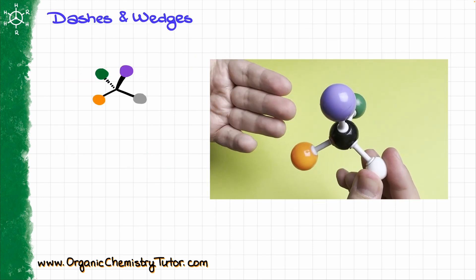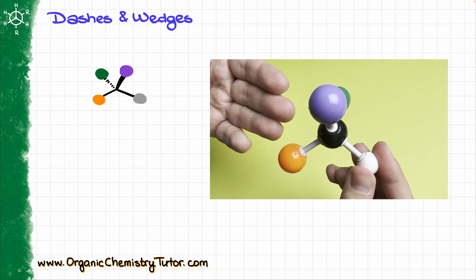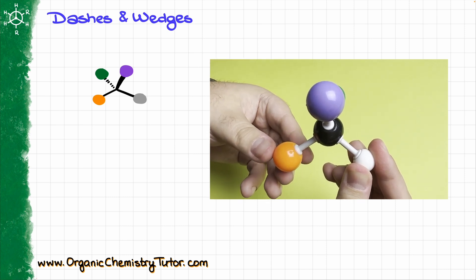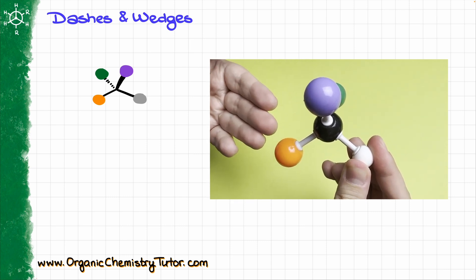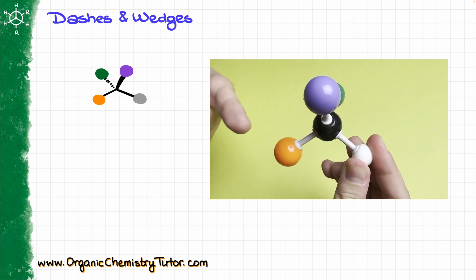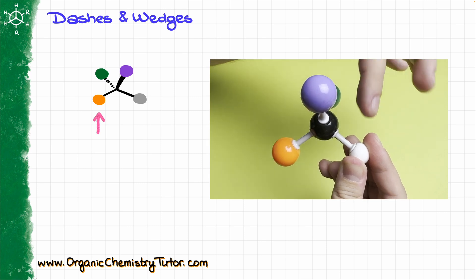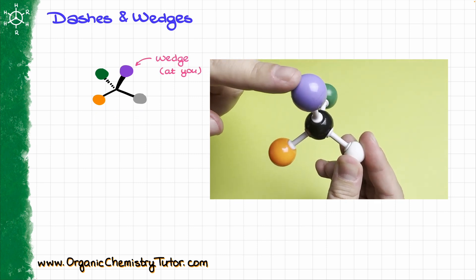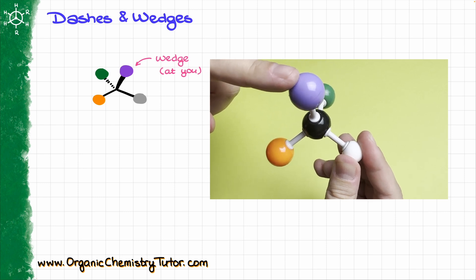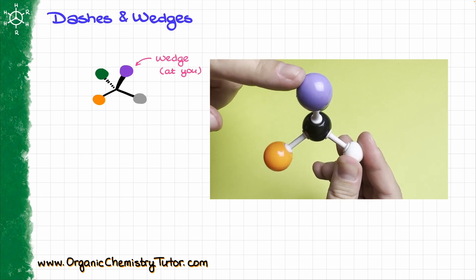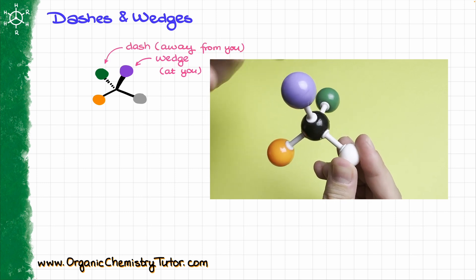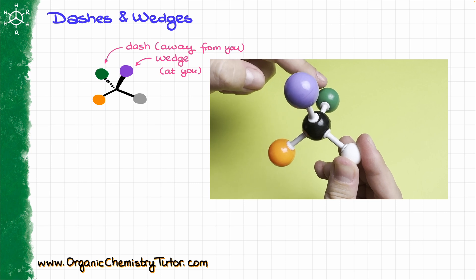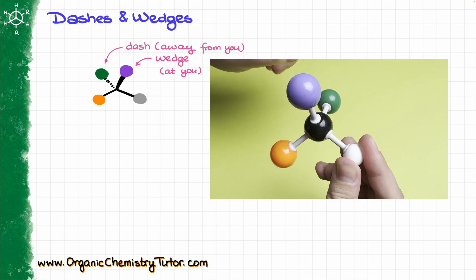When we look at the molecule and draw it in 3D, we imagine that a couple of bonds are in the plane of paper. In my case here, the orange, black, and white balls are all in the plane of paper. The purple one is looking towards us, so we would show this one on the wedge, while the green one that is behind we are going to show on the dash — it is looking away from us.